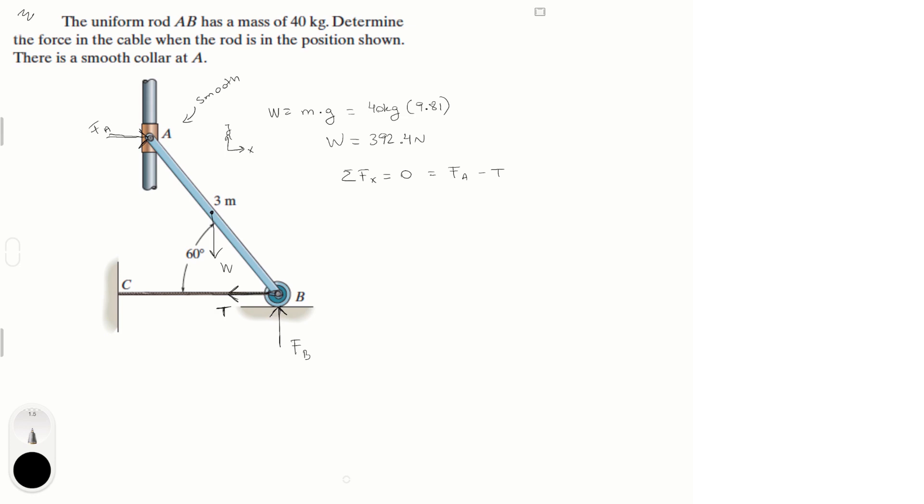Now we know that the sum of the forces at y is equal to 0. And in y we have F of B going up minus W going down. Now we know W which is found right here. So this function tells us that F of B is equal to W. And we know that F of B is equal to 392.4 newtons.